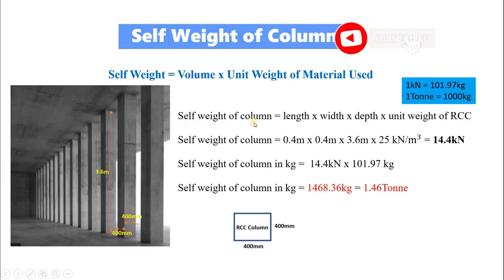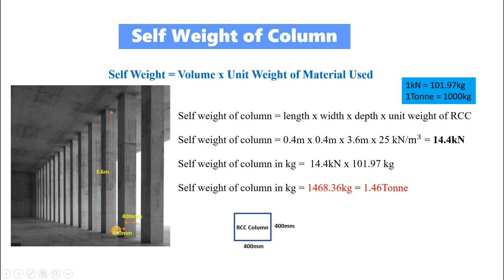Next is self weight of column. Self weight of column equals length of the column into width of the column into depth of the column into unit weight of RCC. Here the length of the column is taken as 400 mm and the width is also taken as 400 mm. So 0.4 multiplied by 0.4 into depth — floor height 3.6 — into unit weight of RCC 25. We will get self weight of column as 14.4 kN. If we need in kg, multiply 14.4 kN with 101.97. Then we will get self weight of column as 1,468.36 kg, that is 1.46 tons.